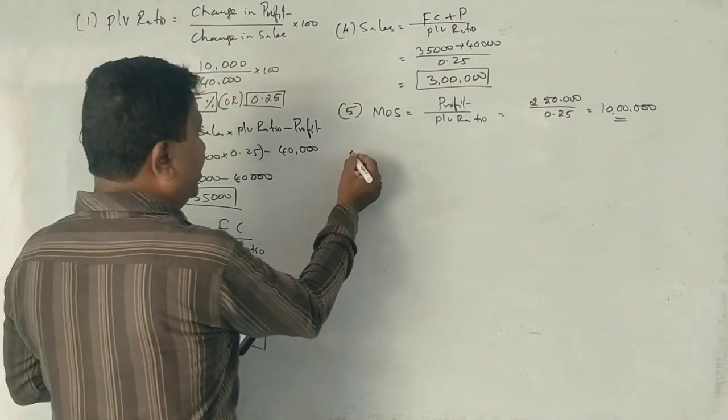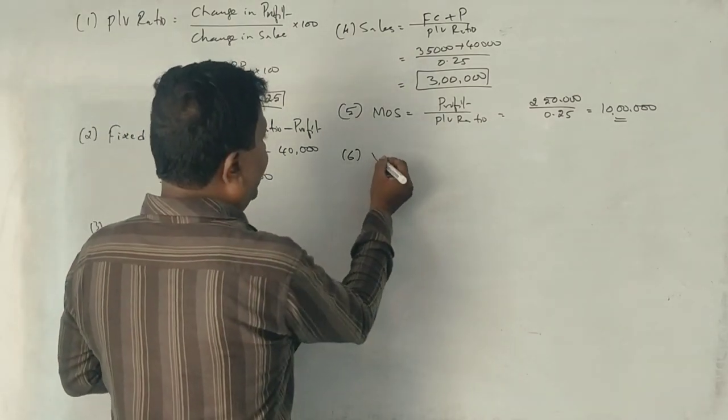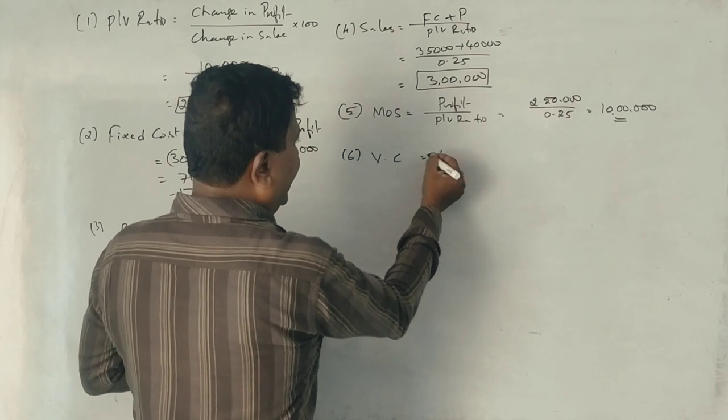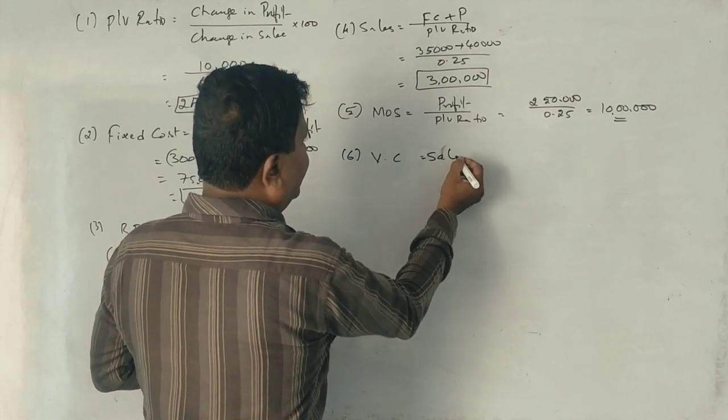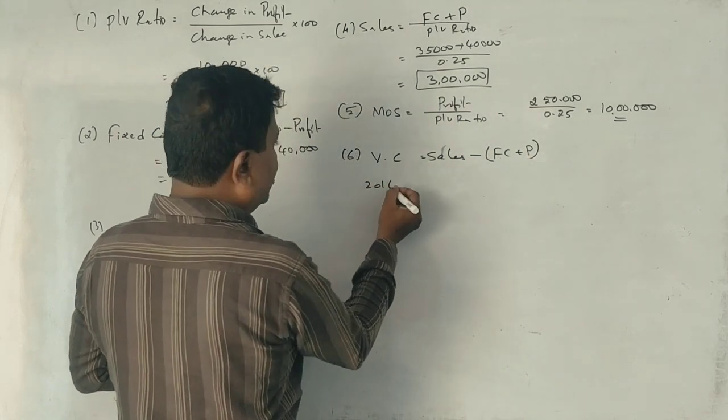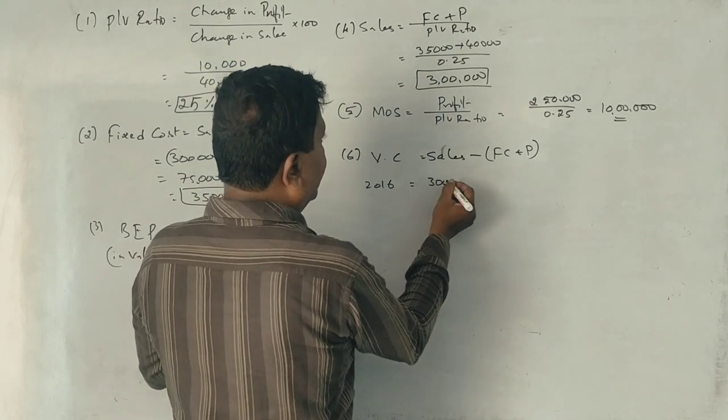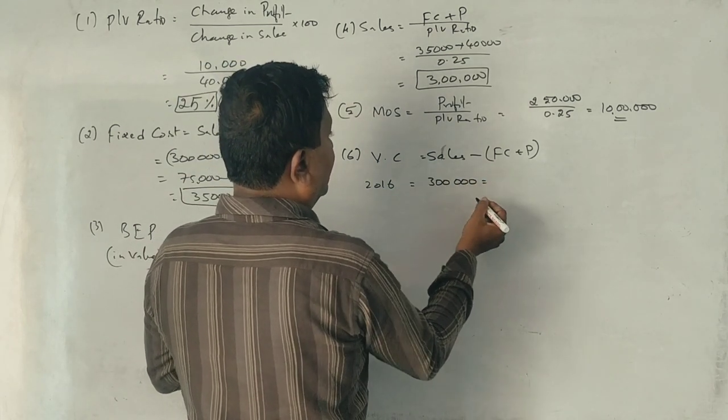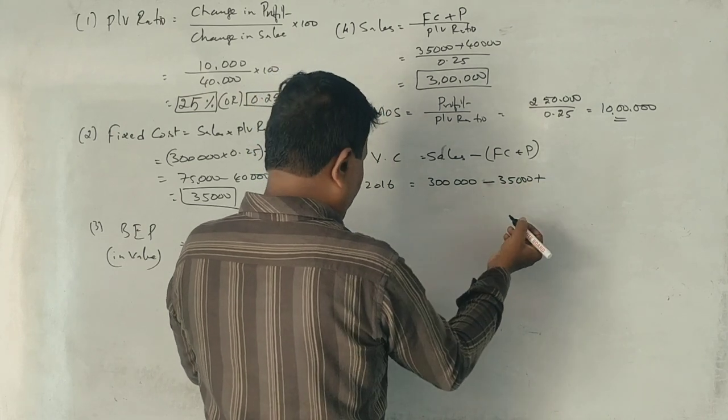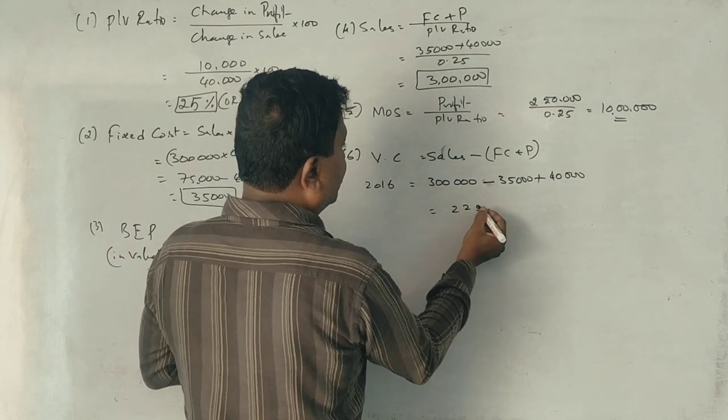Variable cost equals sales minus fixed cost plus profit. For 2016, sales is 3 lakhs minus fixed cost 35,000 minus profit 40,000. I will get 2 lakhs 25,000 rupees.